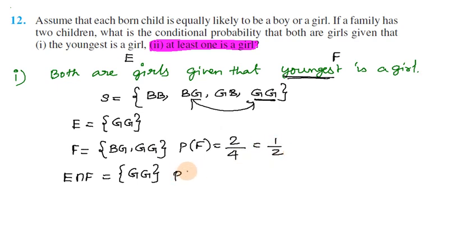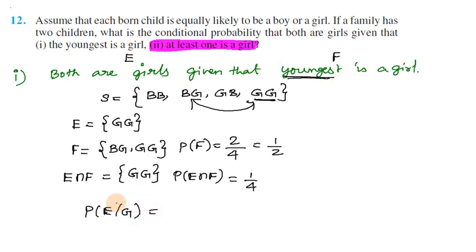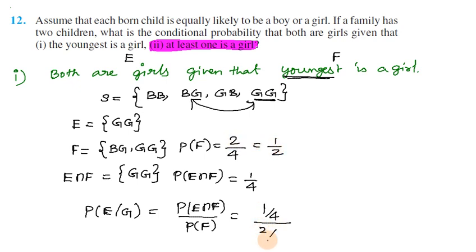P(F) equals 2 outcomes out of total 4, which is 1/2. P(E intersection F) is 1/4. P(E given F) — both are girls given youngest is a girl — using the conditional probability formula P(E∩F) divided by P(F): that is (1/4) divided by (1/2) = 1/2. The answer to the first sub-division is 1/2.